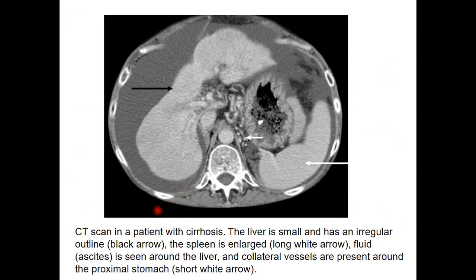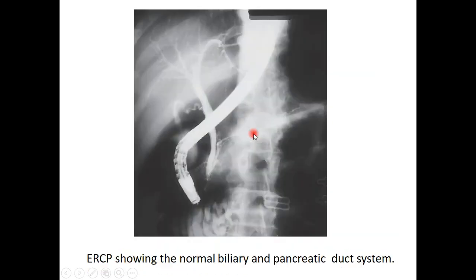This is a CT scan of a patient with liver cirrhosis. As you can see, there is an irregular outline of the liver with shrinkage in its size. This is ascites — ascitic fluid. This is the liver with an irregular outline, and this is enlargement of the spleen. Splenomegaly is seen with liver cirrhosis and portal hypertension. This is the stomach, and these are the collateral vessels.